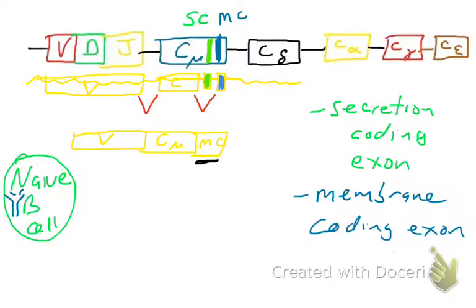The membrane coding exon gives us hydrophobic amino acids that insert this protein into the plasma membrane of the B cell. This membrane coding region — from the membrane coding exon — gives rise to the constant region of the heavy chain, specifically constant mu for IgM. When this is transcribed and translated in the cell, the heavy chain ends up in the plasma membrane. The membrane coding exon contains very hydrophobic amino acid information, and that is how the heavy chain protein is embedded in the plasma membrane.